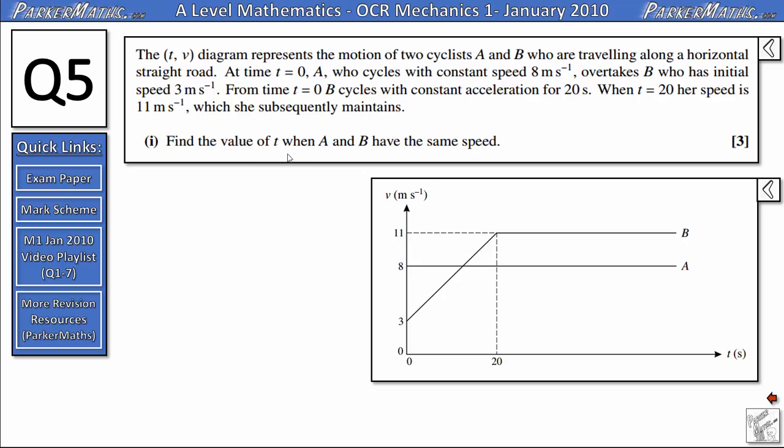In part 1 we need to find the value of t when A and B have the same speed. Looking at the graph we can see cyclist A here cycling with constant speed and cyclist B accelerating until t equals 20 and then travelling with constant speed after that. The point when they are both travelling with the same speed is just here on the graph.